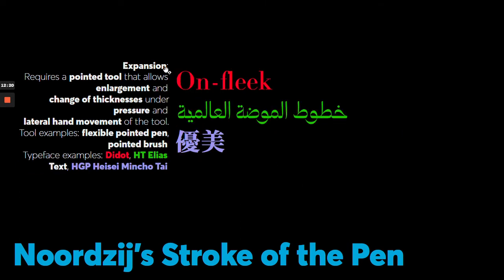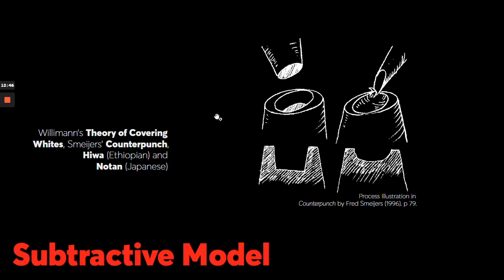For the expansion set, we have Didot, HD-Alias, and Heisei Mincho Tai — requiring a noodler's pen or a flexible pointed pen, or a brush. For the subtractive model, the negative forms get more focus, just as this process shows.